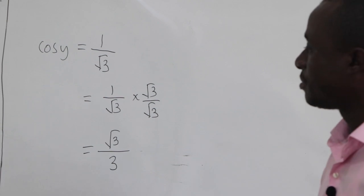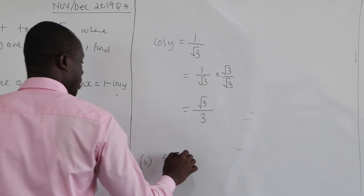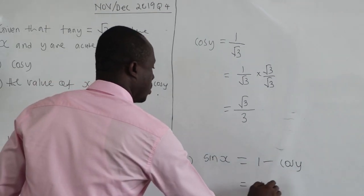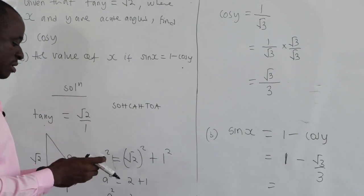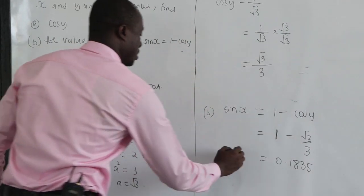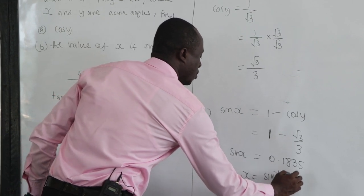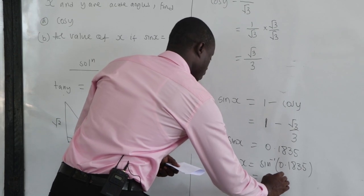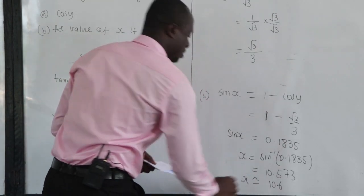For part B, we should find x if sine x equals 1 minus cos y. Substituting, we have sine x equals 1 minus root 3 over 3. Using the calculator, this gives approximately 0.1835. We want to find x, so x equals sine inverse of 0.1835, which gives 10.573 degrees. To one decimal place, that is x equals 10.6 degrees.